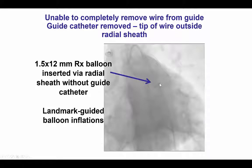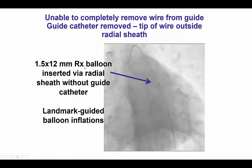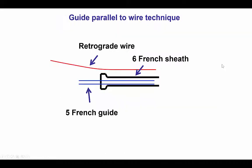Eventually, necessity being the mother of creativity, we ended up completely removing the antegrade guide catheter, and that allowed us to get access to the externalized wire. Over this wire that did not have a guide catheter, we advanced a 1.5 mm balloon and performed inflations into the LAD at where we thought was going to be the proximal cap and the occlusion. But of course, it did not solve the problem of delivering a stent into the mid-LAD.